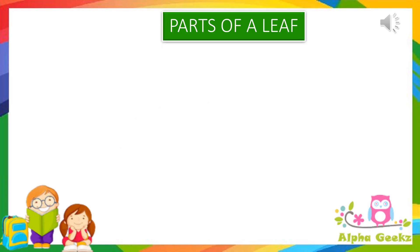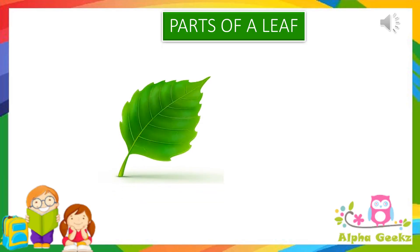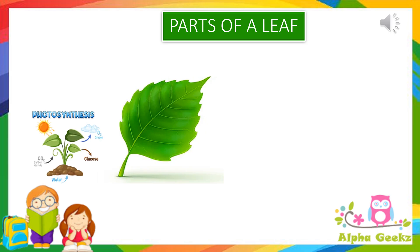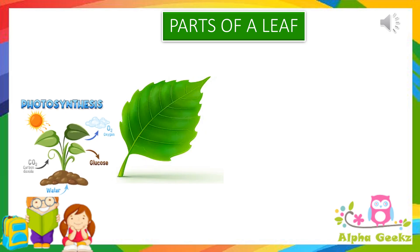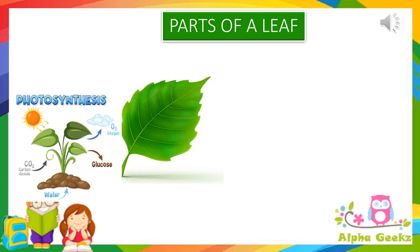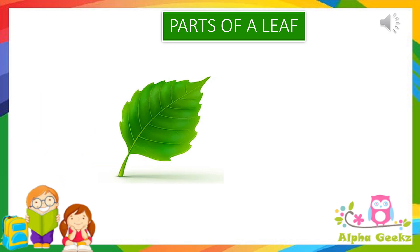Parts of a leaf. Leaves are present on the stems and are the most important part of the plant because they prepare food by the process of photosynthesis. Since most plants depend on the leaves to make food, and it is the place where food is prepared, it is called the kitchen of the plant or the food factory of the plant.